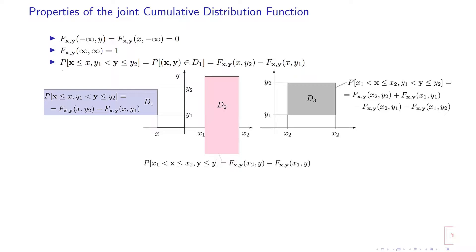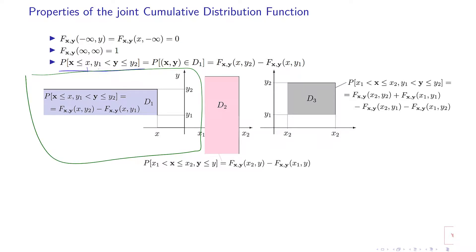If I want to calculate the probability of the event that x is smaller than some value and y is in a given interval, I look at the x-y plane. In this shaded area, x should be on the left side of this vertical line, and for y I have y2 here and y1 here, so y should be below y2 and above y1. The intersection will be this shaded band. Remember that this point x can equal x, so this line is included. Y is not equal to y1, so this lower line is not included, but the upper line is included.